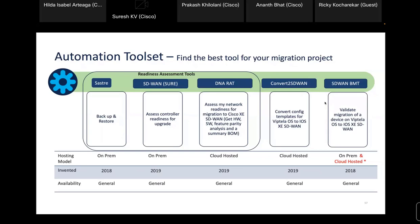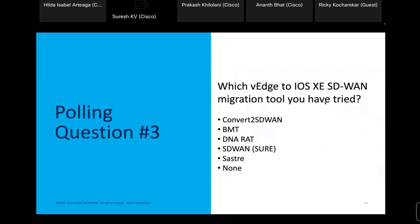Regarding tool availability: some tools — Sahasri and the vManage Show Tool — are on-premises, installed via a small installer file on your laptop or vManage. DNA RAT, Convert to SD-WAN, and SD-WAN VMT are cloud-hosted. Development of these tools started in 2018, meaning they've gone through nearly three to four years of quality testing. Any partner or customer can download and install them on their own — there is no license cost associated with these tools.